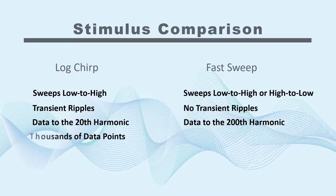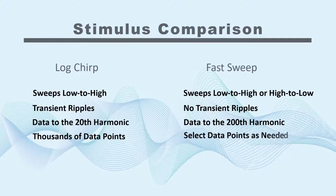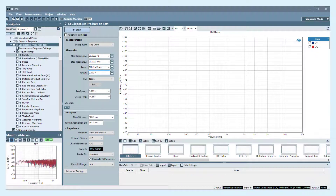A logchirp will produce thousands of data points in a short time, usually many more than the actual points of interest. With a fast sweep, you can select the number of data points and the point spacing that you need for the measurement, and fast sweep has multiple options to manage the number of data points.